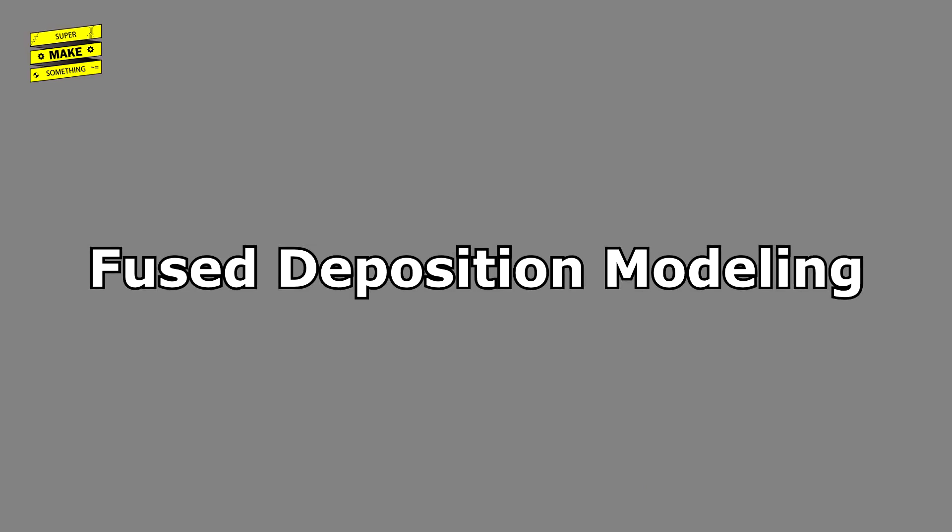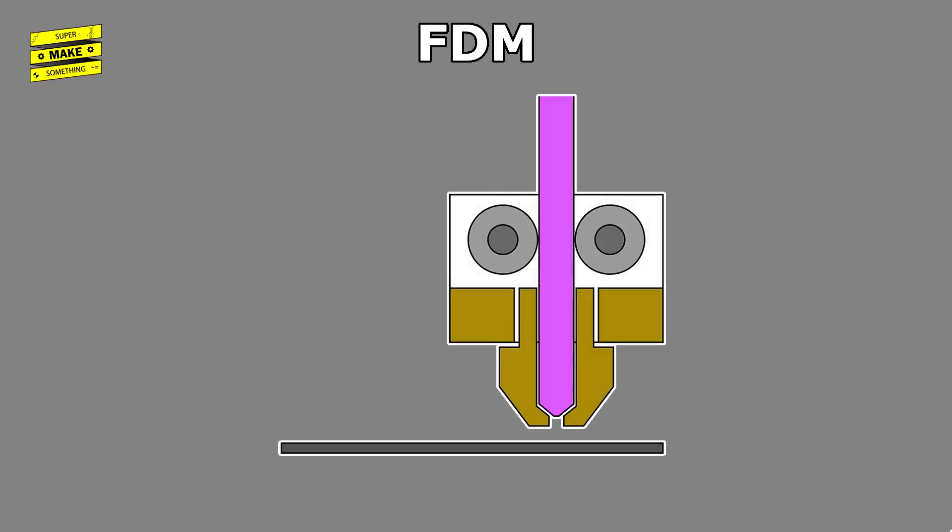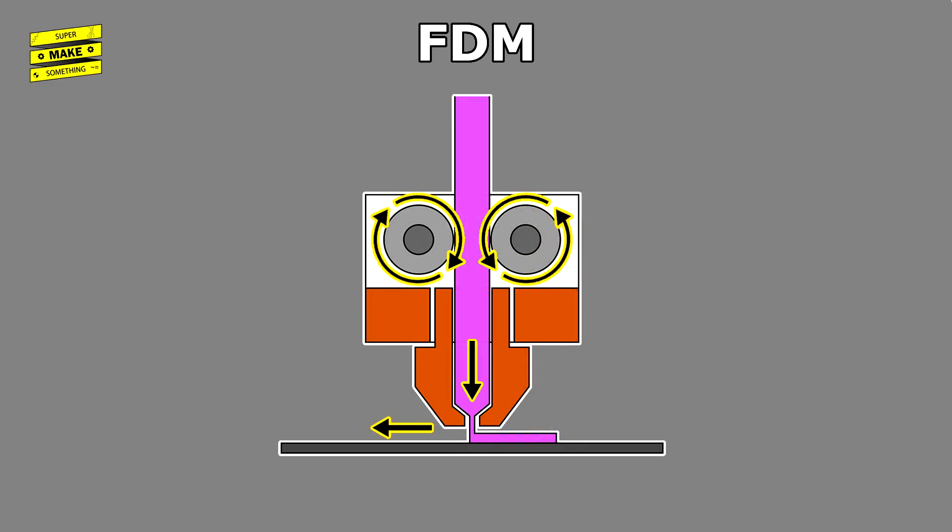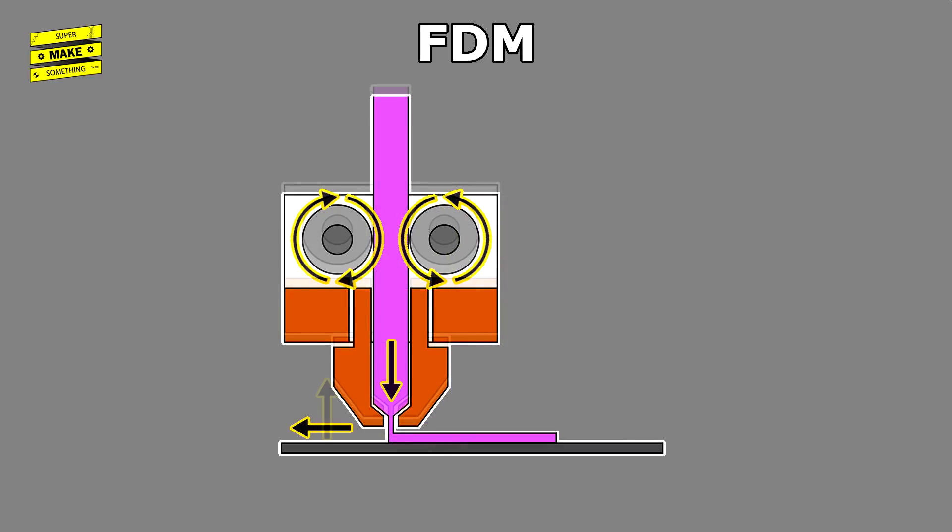Until recently, most hobby 3D printers relied on a process called Fused Deposition Modeling, or FDM. In FDM printing, a heating element first heats a print nozzle to around 200 degrees Celsius, and then uses a stepper motor to extrude plastic filament that is melted as it travels through the nozzle onto a print bed.